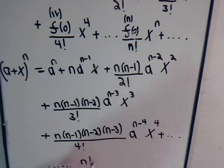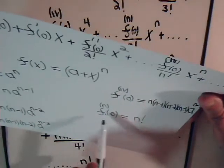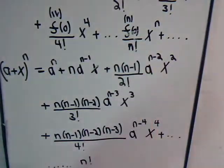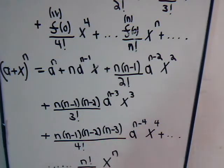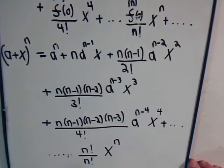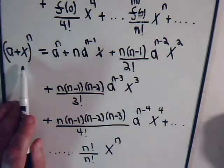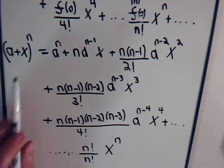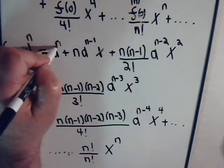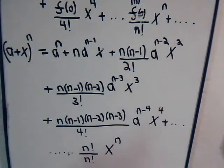We have n factorial divided by n factorial times x to the n. So here we have (a + x) to the n expressed as a power series — specifically the Taylor expansion series — and this is the expression we get. That final coefficient is just 1.